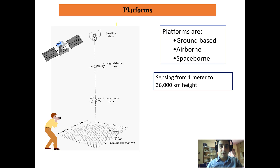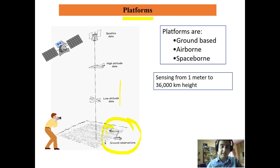We have different kinds of platforms where sensors may be placed to perform remote sensing. Ground-based platforms include cranes on which a sensor is placed and raised to a certain elevation from the ground to capture images. We also have ground-based cameras. Low-altitude data can be collected from low-flying choppers or aeroplanes.